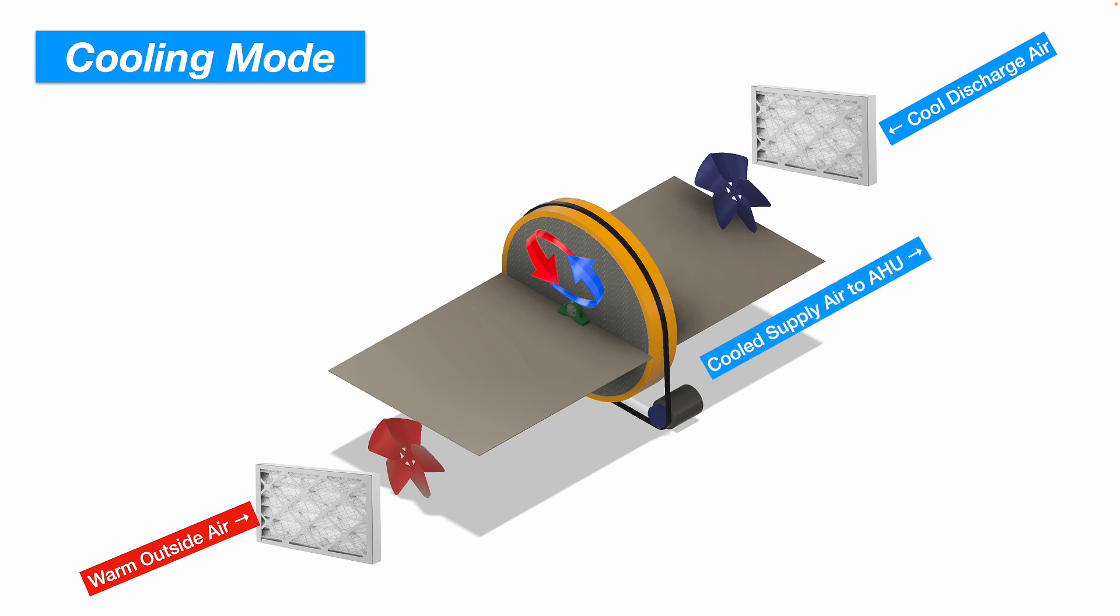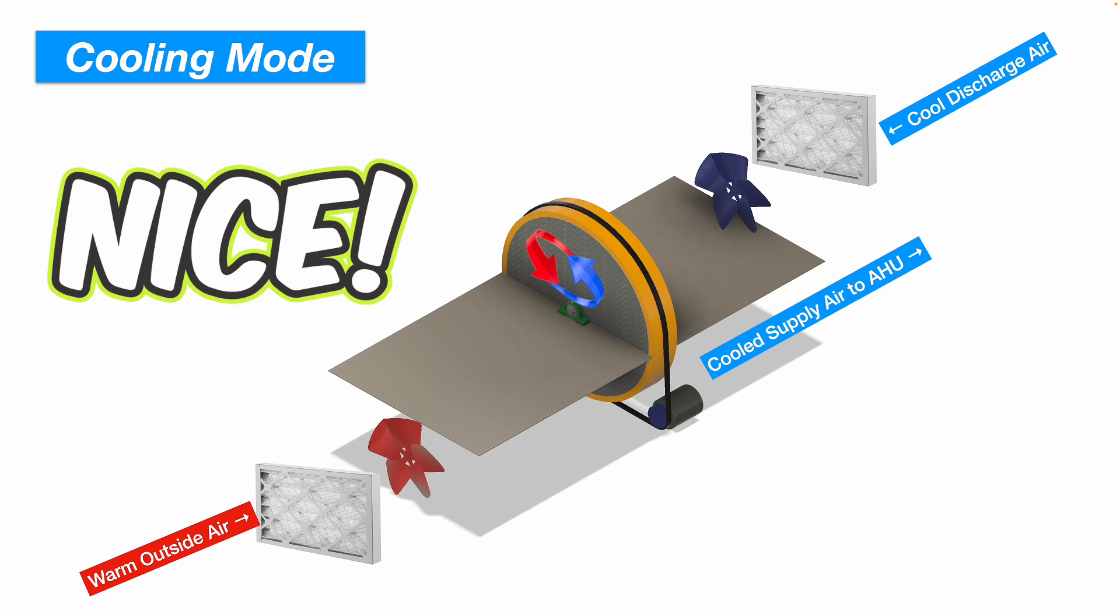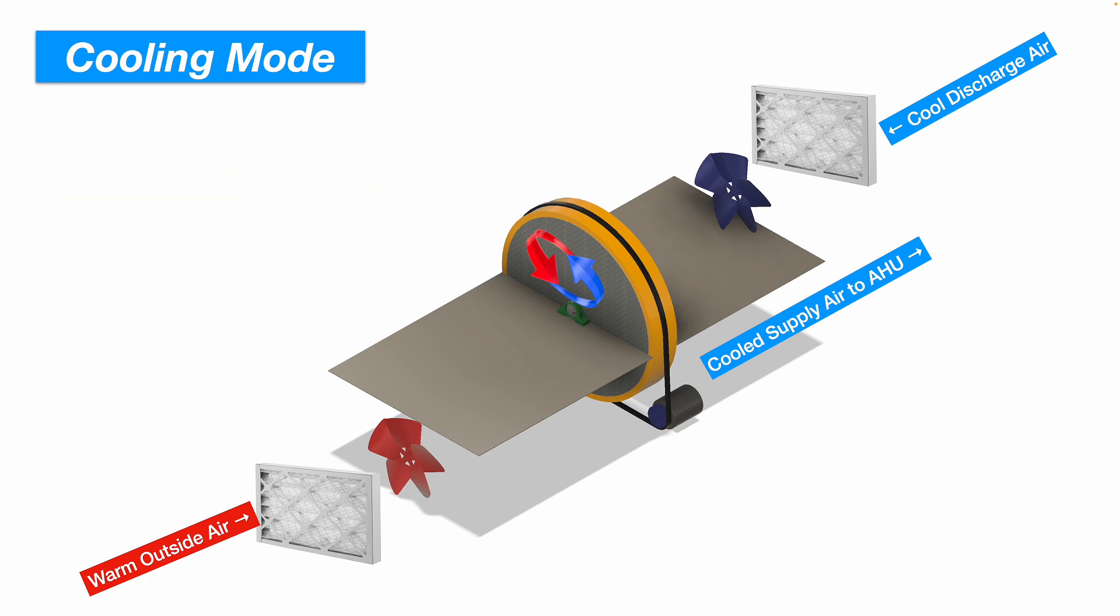Which means you're going to have cooled supply air going to your air handling unit. Which, again, means your system can run more efficiently. The system won't have to work as hard to keep up with the cooling load of the building, potentially, because you're pre-cooling the air being supplied to the air handling unit cooling coil.